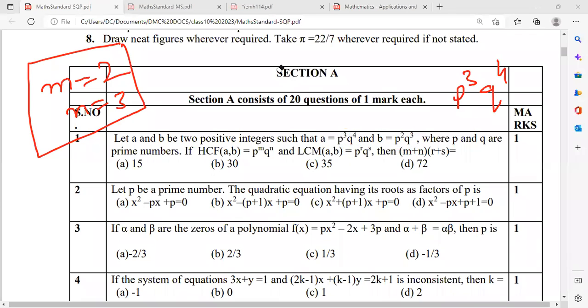According to them, LCM is p to power r, q to power s. Compare. That means r should be the exponent of p, which is 3. And s, which is the exponent of q, which is 4 here. So r is 3 and s is 4. We got the value of m, n, r, and s.